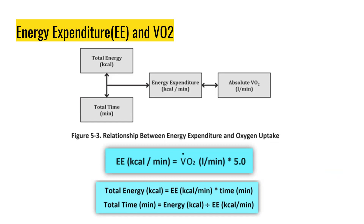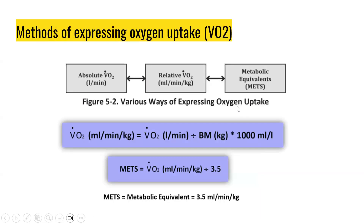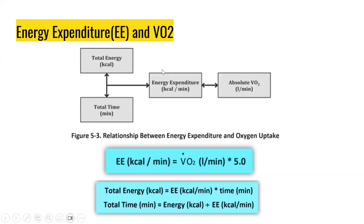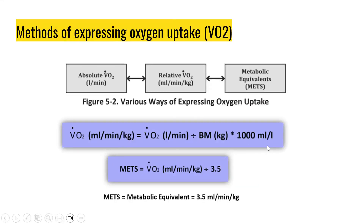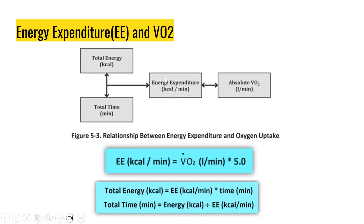This section of the metabolic flow chart shows the relationship between energy expenditure and oxygen uptake. To calculate energy expenditure — calories per minute — you need to convert oxygen uptake to absolute terms in liters per minute, then use: Energy Expenditure (kcal/min) = absolute VO2 (L/min) × 5, where 5 is a constant. From there, you can calculate total calories expended by multiplying energy expenditure by total exercise time.